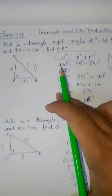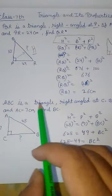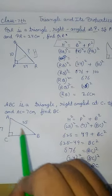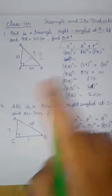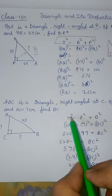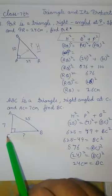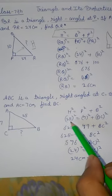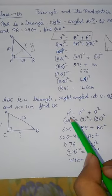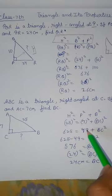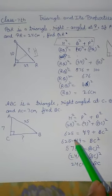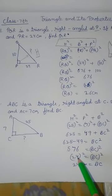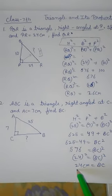I hope you understand. Now similar question: ABC is a right angle triangle, right angled at C. Using same relation, in this question BC we have to find. They gave us hypotenuse and perpendicular values. 25 squared equals 625, 7 squared equals 49. Now subtract these two: 625 minus 49 equals 576. This is the square of 24. Square root of this gives us 24 centimeter.